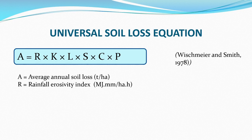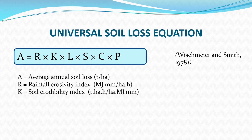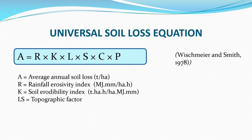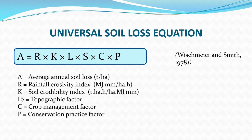K is the Soil Erodibility Index — the susceptibility of soil to erosion, with units of ton-hectare-hour per hectare-megajoule-millimeter. LS together is the Topographic Factor: L is the length of slope and S is the steepness of slope. C is the Crop Management Factor and P is the Conservation Practice Factor. In this chapter, we will learn how to estimate these indexes.